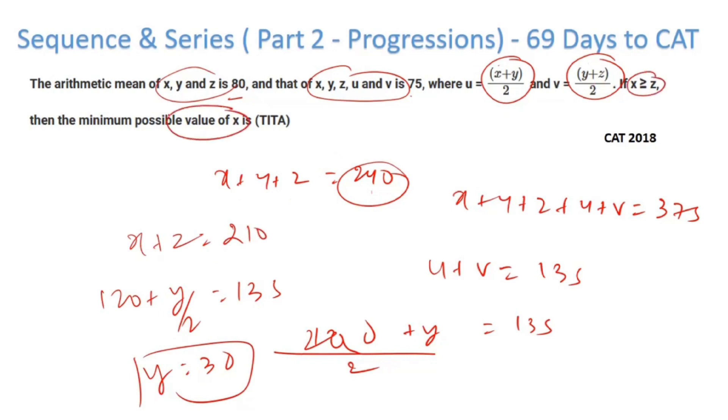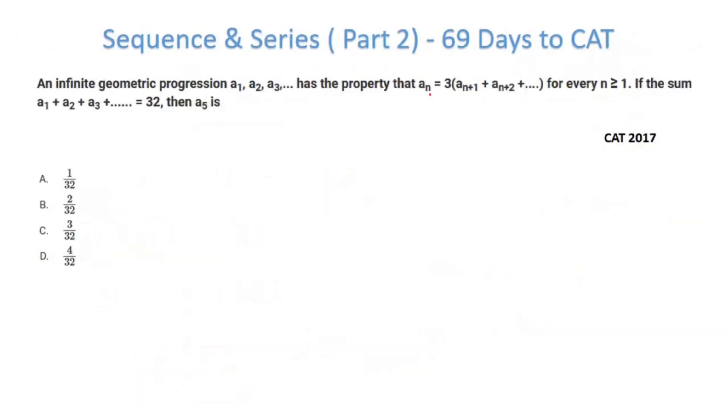x + y + z I know is 240, so this becomes 120 + y/2 = 135. So y = 30. If you plug it here, x + z = 210. I know x ≥ z, minimum that x can become is equal to z. Therefore 2x = 210, x = 105. That's CAT 2018 for you.